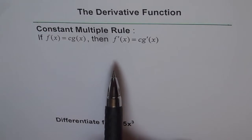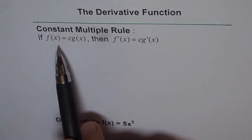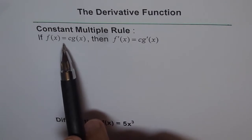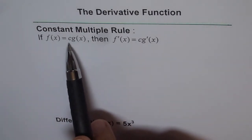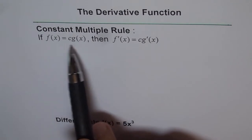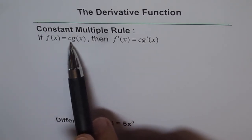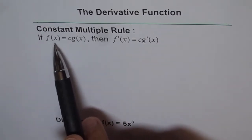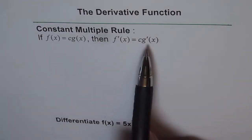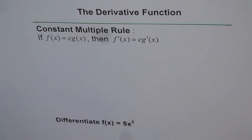That is, the derivative of function f of x, where it is defined in terms of another function g of x times a constant — if that is how a function is defined, meaning another function g of x times a constant c, then the derivative of this function is the derivative of g of x times constant c. So that is what it means.